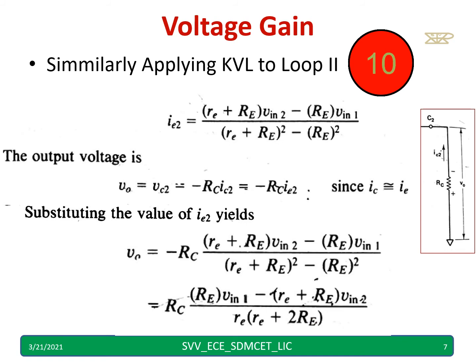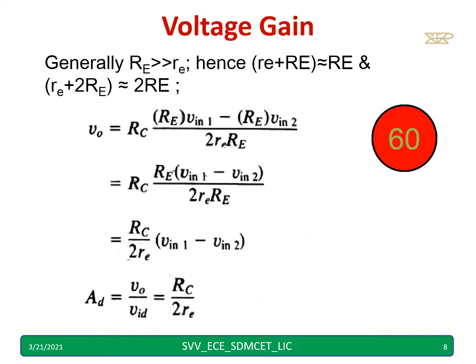RE into VIN1 minus RE plus RE into VIN2 and RE into bracket RE plus 2RE. You can pause the video and just go through once again. Generally RE is very, very high compared to re. Hence, I can rewrite RE plus re equal to capital RE. For example, 1 ohm plus 1 mega ohm equal to 1 mega ohm only nearly. So therefore, RE plus 2re is almost equal to 2RE. So the same equation I have rewritten. Now I have taken RE common. VIN1 minus VIN2 I will get.